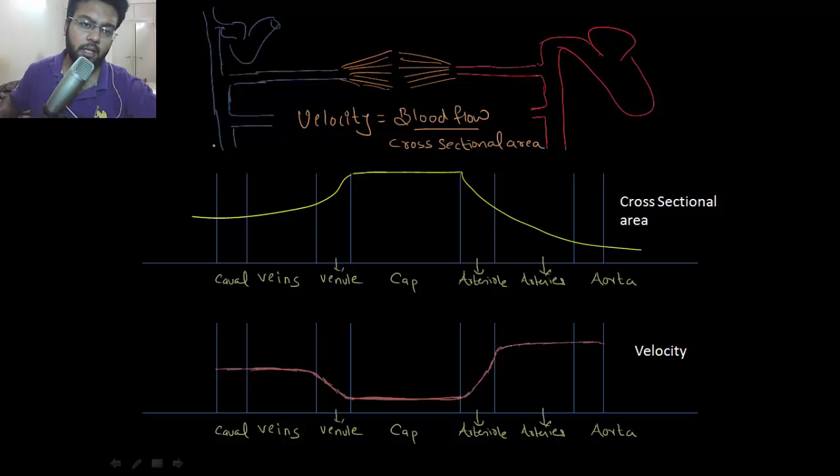All right guys, let's begin with hemodynamics. This always used to be a non-important topic in everybody's undergrad time. We'll develop a relationship between velocity and the cross-sectional area of the blood vessel. They are inversely proportional to each other, and velocity and blood flow are directly proportional to each other.